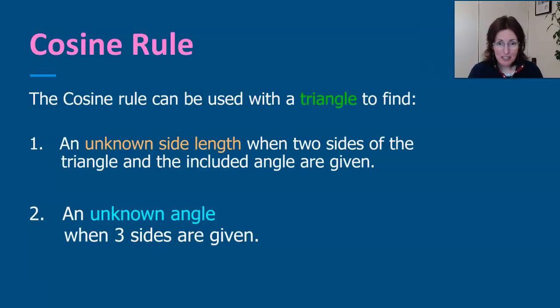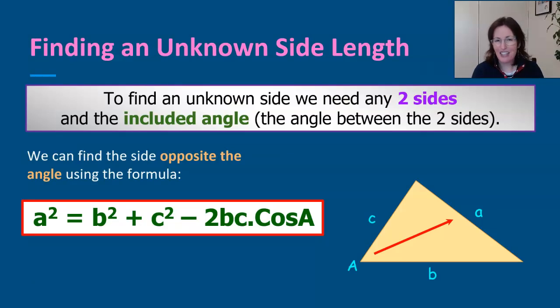We use the cosine rule in a triangle to find an unknown side length when two sides of the triangle and an included angle are given, so if you need to find that third side. Or you can use it to find an unknown angle when you are given three of the sides. So they're the two times you use it, let's have a look at each of them.